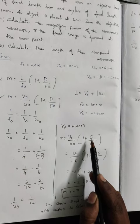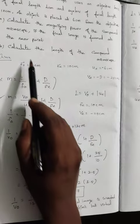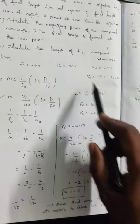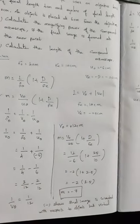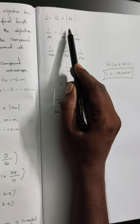Next is calculating the length of the microscope. The direct formula is V0 plus modulus of UE. I don't have UE, so I get help from lens formula.